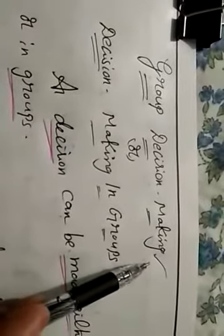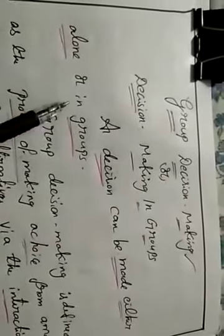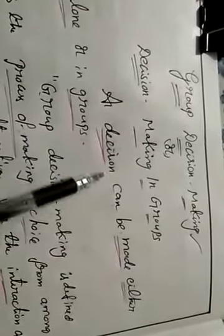Decision making is the best tool or technique for management to take a solution for any problem. Decision making can be made either alone or in groups. Decision making is used to take the correct step among different alternatives, and when we are facing any problems, we have to select the better alternative. Decision making is also called a problem solving technique.